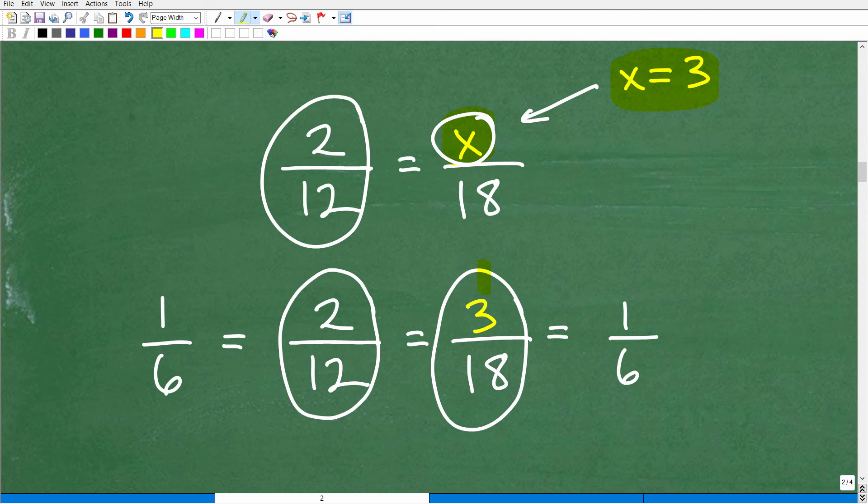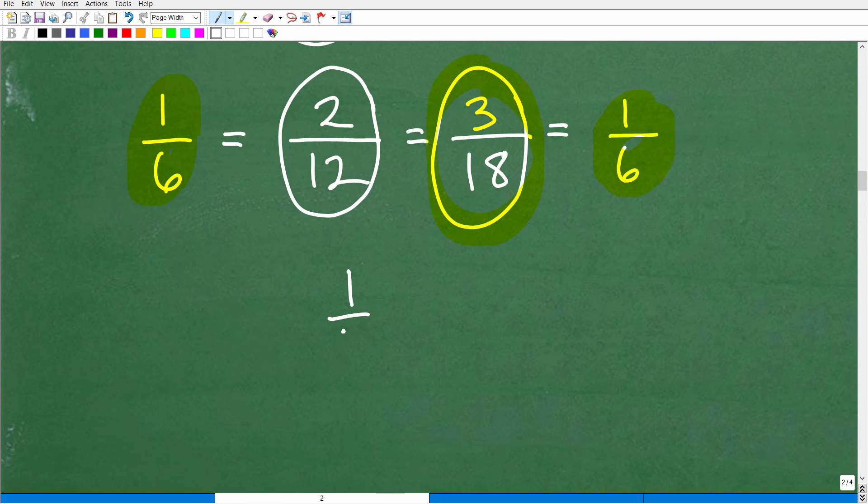And if I was to reduce this fraction here, 3 over 18, I would have the fraction 1/6. And if I was to reduce this fraction over here, 2 over 12, I would have the fraction 1/6, i.e., again, we're dealing with a proportion, 1/6 is equal to 1/6, a proportion of two equal fractions. You can see that right there explicitly.